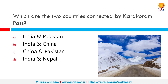Which are the two countries connected by the Karakoram Pass? The correct answer is India and China. The Karakoram Pass is a mountain pass between India and China in the Karakoram range. It is the highest pass on the ancient caravan route between Leh in Ladakh and Yarkand in the Tarim Basin. 'Karakoram' literally means 'black gravel' in Turkic.